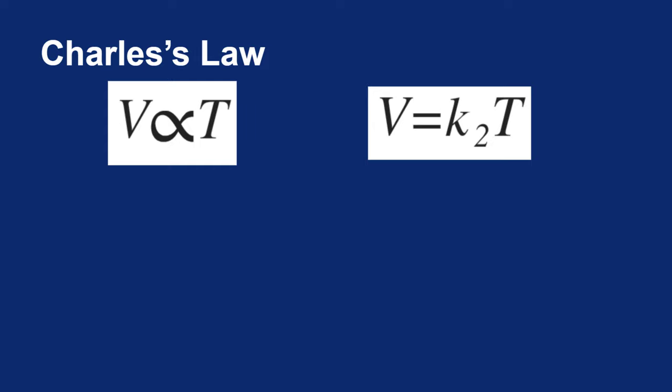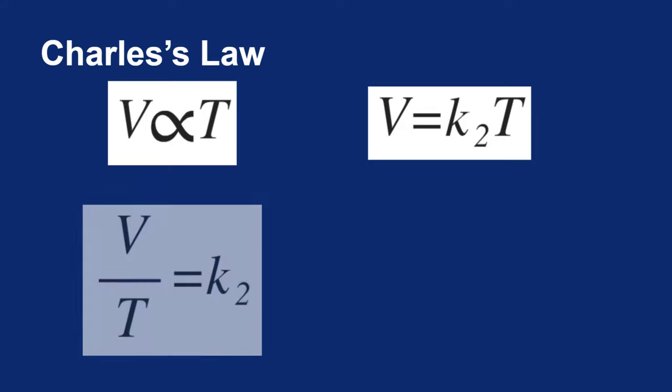As before, what we can do is we can move the variables on one side and keep the constant on the other. So you get a statement that looks like this, V over T equals a constant. And again, this shows a direct proportionality. If K is to be constant, if you increase volume, you must increase temperature to keep K constant.